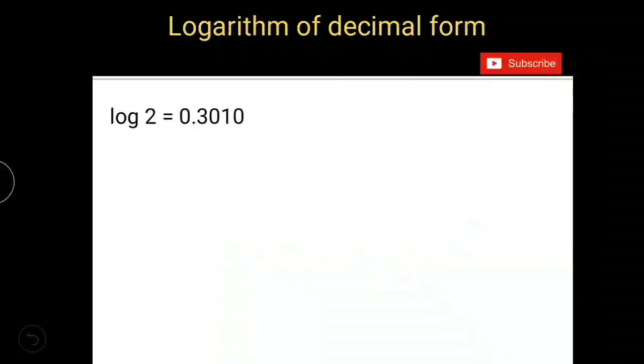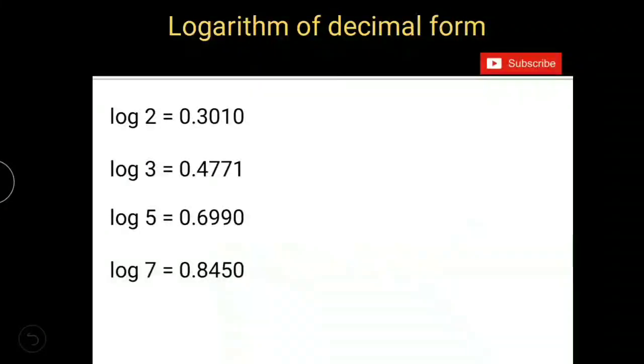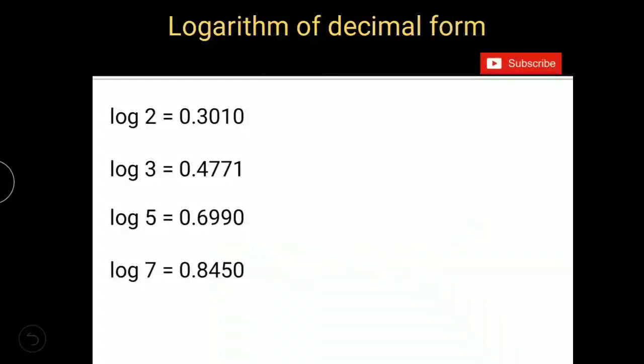For that, we need to know four logarithm values: log 2 is 0.3010, log 3 is 0.4771, log 5 is 0.6990, and log 7 is 0.8450.